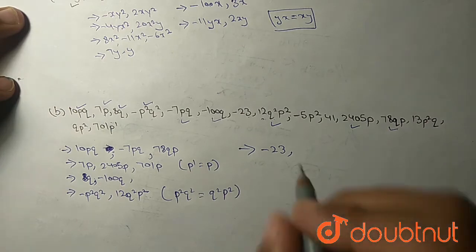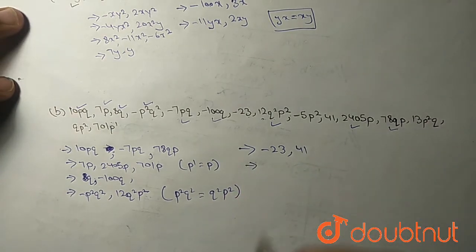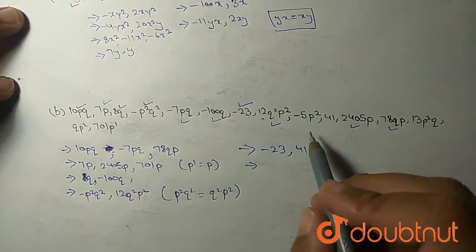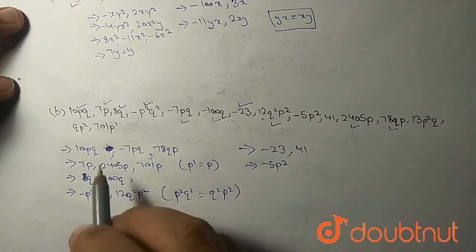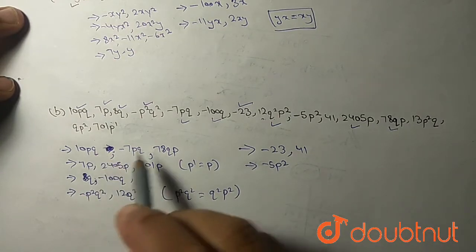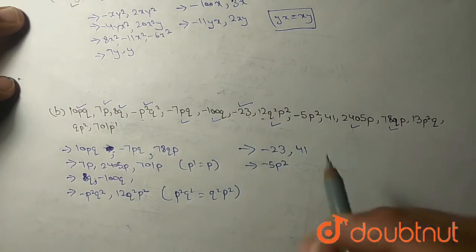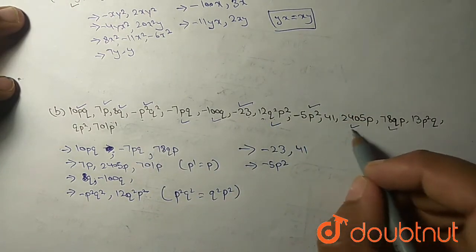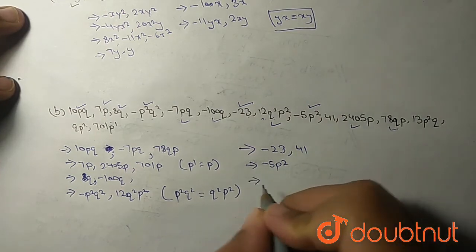Now another minus 5p squared. Is there any number having p squared only? See, minus 5p squared, no, there is no any number.